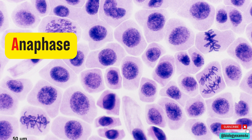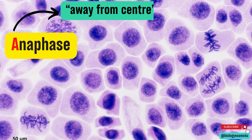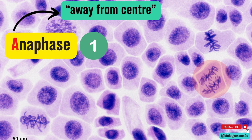Now let us find out the next easy stage, that is anaphase. Just remember A for away from center. Now find out cells with chromosomal strands moving towards the poles of the cell. Here you can see in this cell the chromosomes are moving towards the poles. So there is only one cell at anaphase.